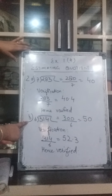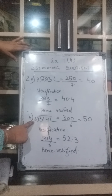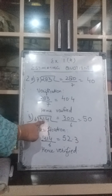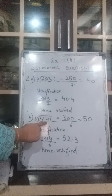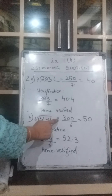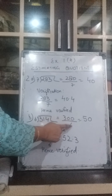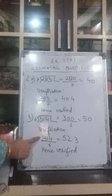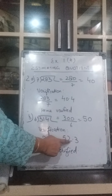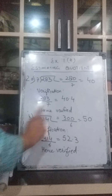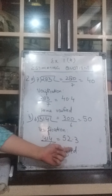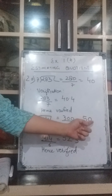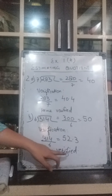B part: 314 divided by 6. We are converting the dividend into a number close to it which is easily divisible by 6. So we convert to 300. 300 divided by 6 gives you 50. Verification: 314 divided by 6 gives 52.3. If we round that off we get 50. Hence verified.